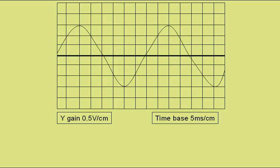There are two important dials on the oscilloscope. One is the Y gain, which tells us how many volts of input are needed to rise one square on the vertical axis. In this case, the Y gain is 0.5 volts per centimetre, meaning this trace has a peak voltage of 1.5 volts. However, to find the frequency of a sound, we don't need to consider the Y gain further.